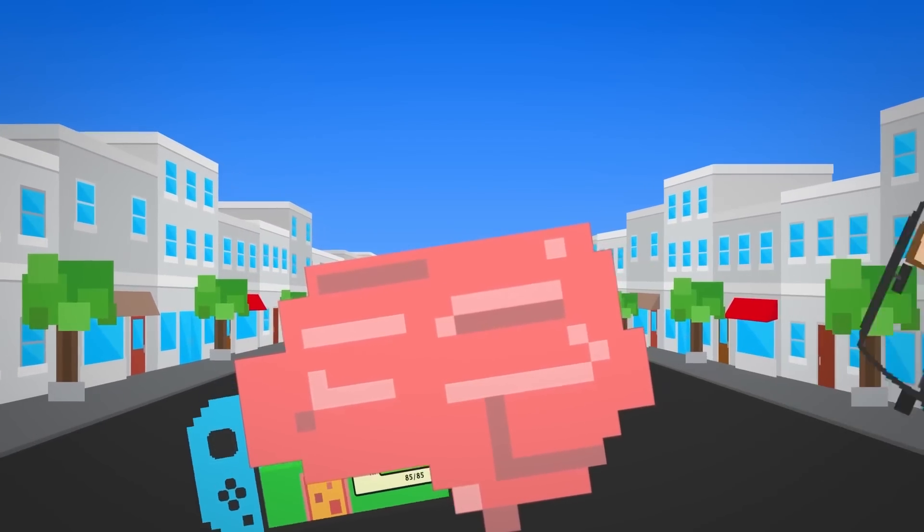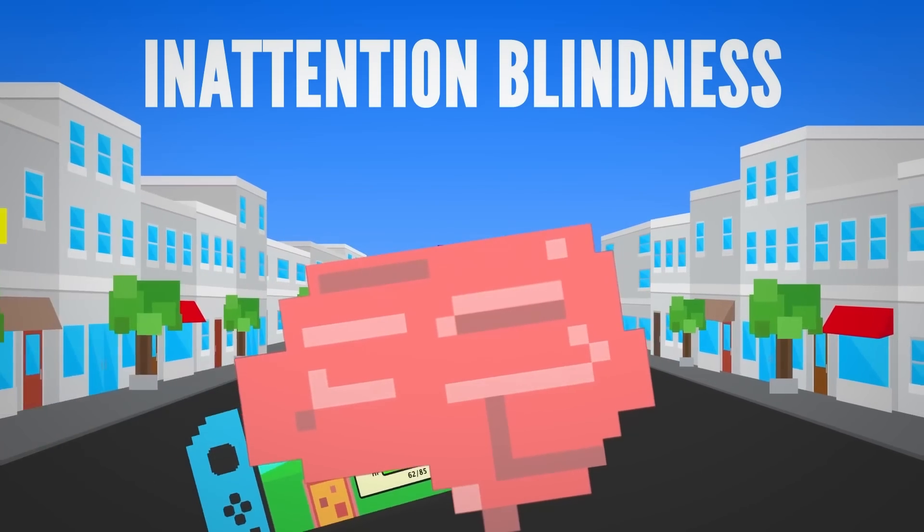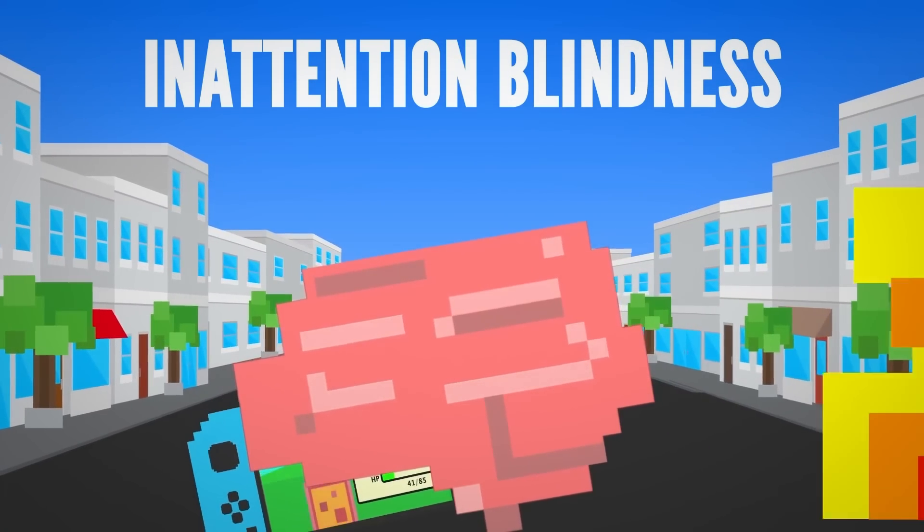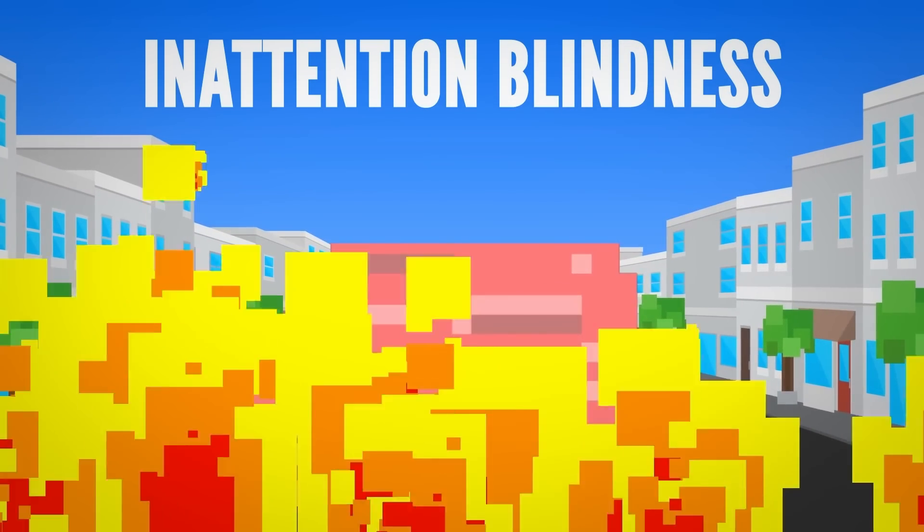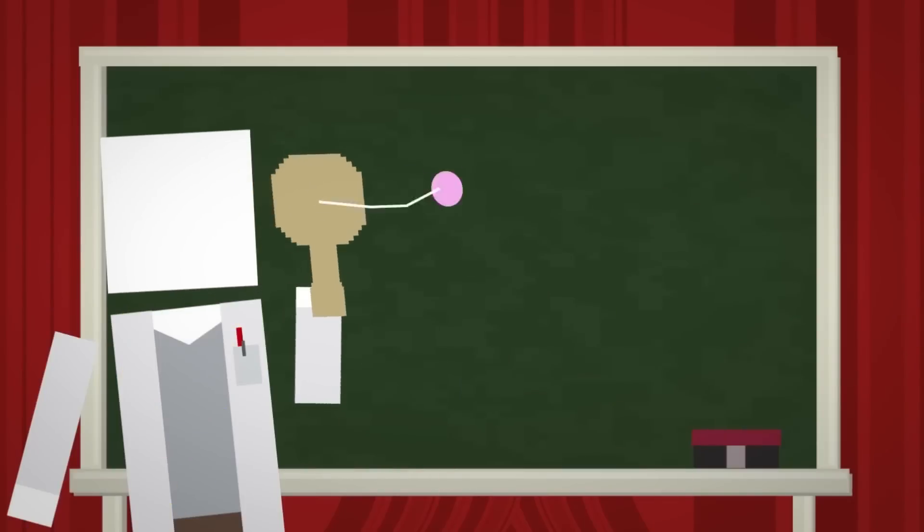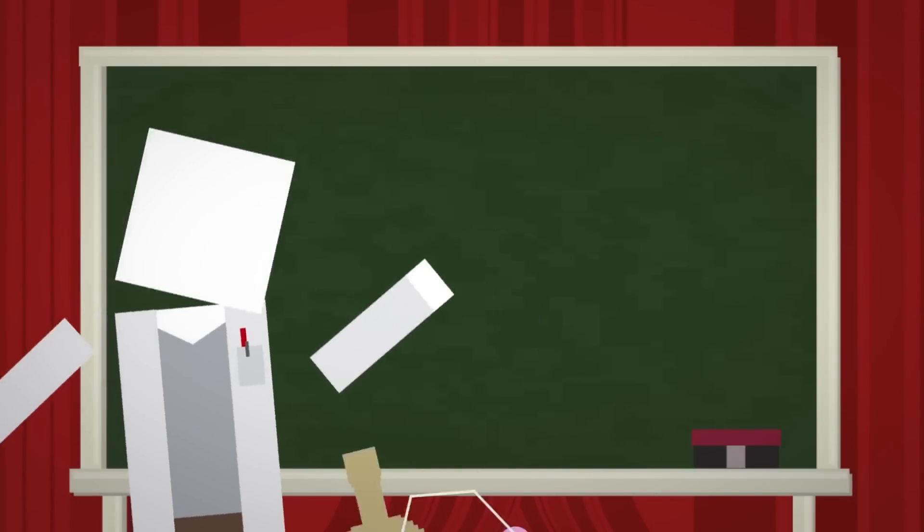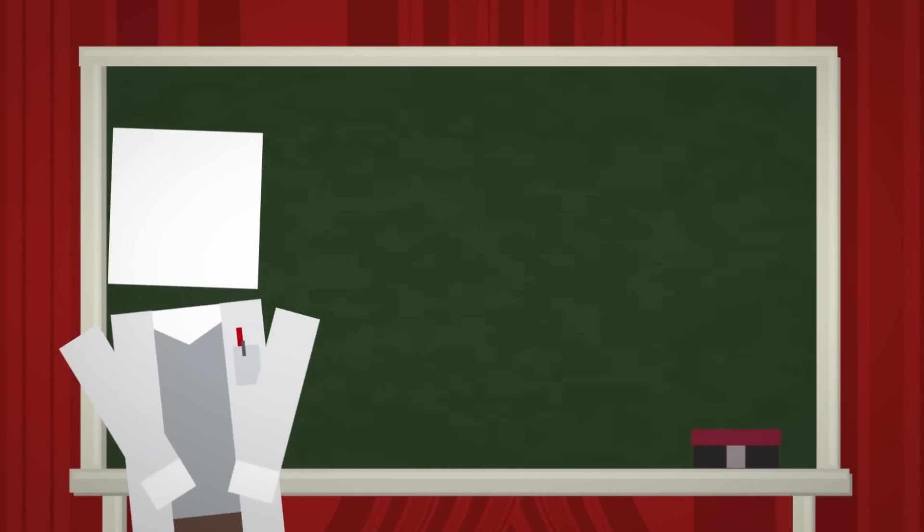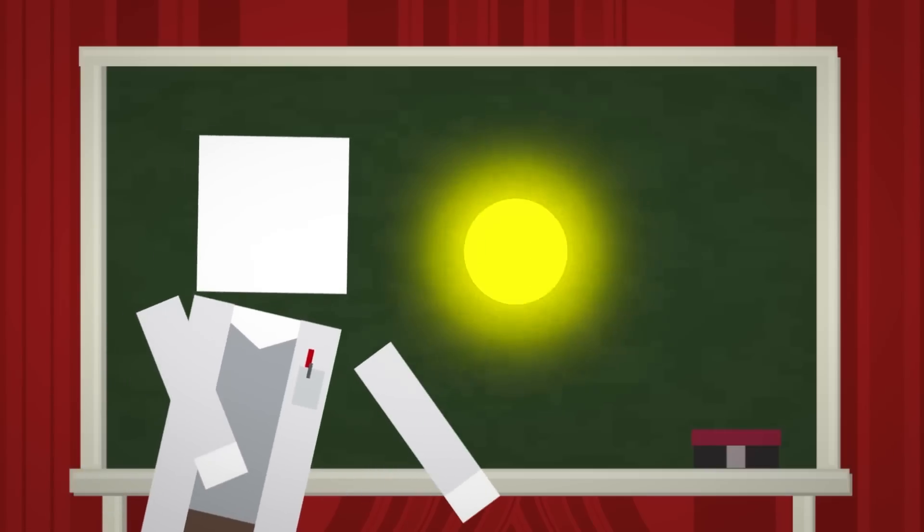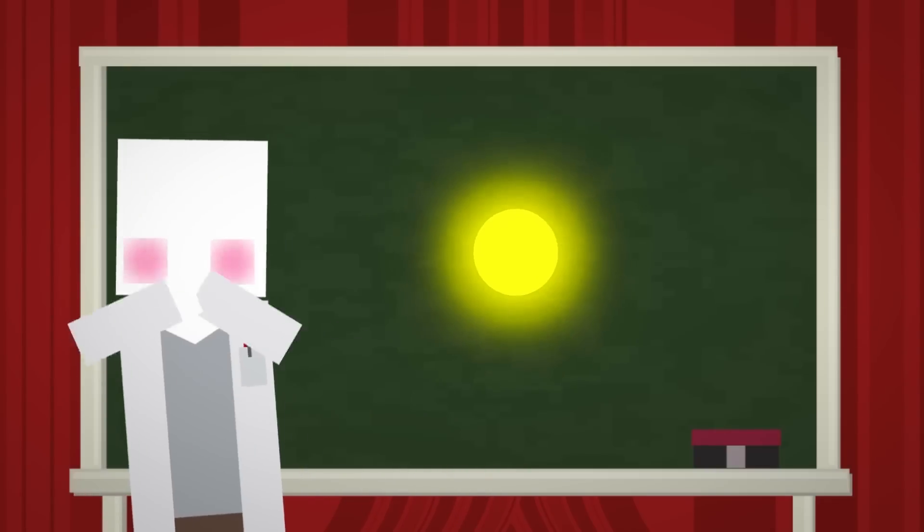This phenomenon is known as inattention blindness, where you don't see things that are right in front of you simply because you are paying attention to something else. This may be because you are completing a certain task, like counting passes or footballs, or because something is distracting you, like a bright color, movement, or a familiar face.